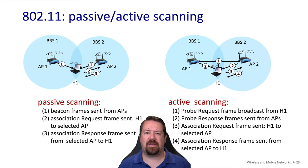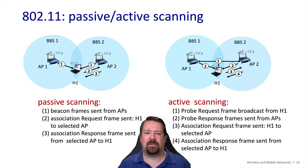However, it is important to note a significant security vulnerability: the probe request contains a list of SSIDs that this host has connected to in the past — the networks that appear as remembered in the wireless options menu. A malicious access point can overhear this list of known SSIDs and send back a probe response pretending to be one of them, tricking the host into connecting to this rogue access point. The rogue access point is then in a position to perform man-in-the-middle attacks on that host's traffic. There are some mitigations, but that's covered in the wireless security class.